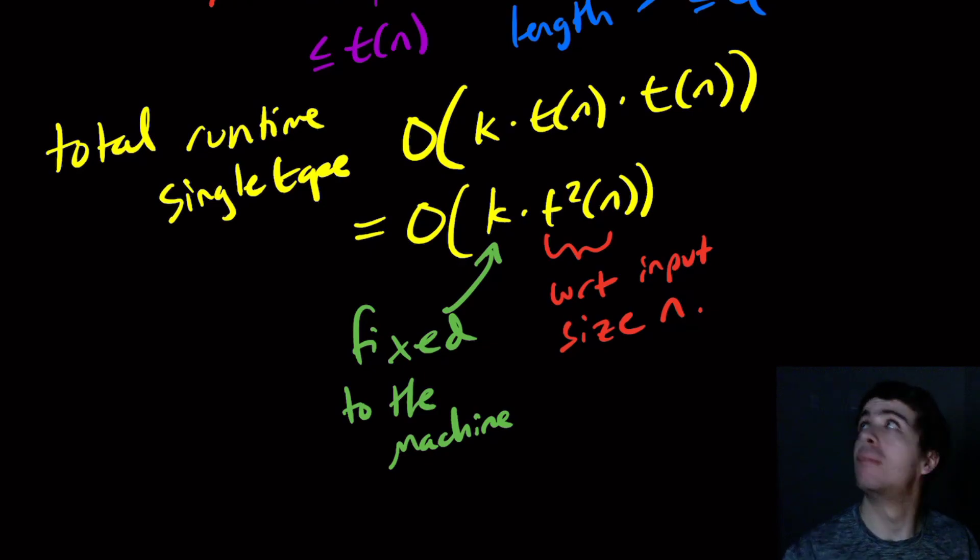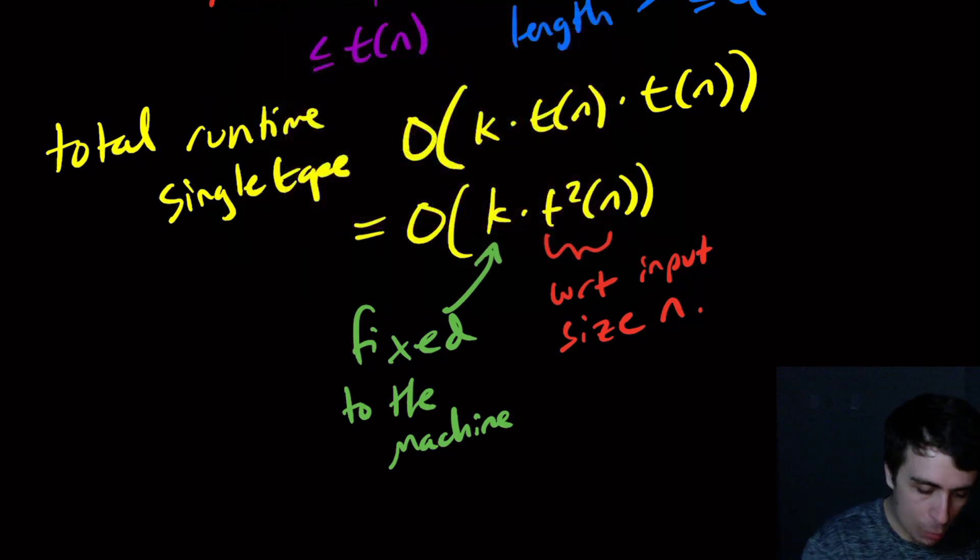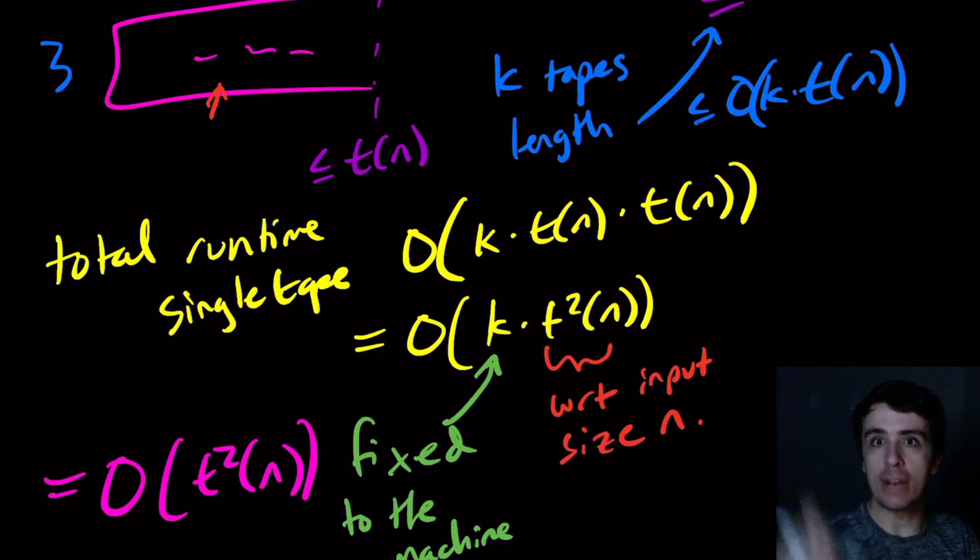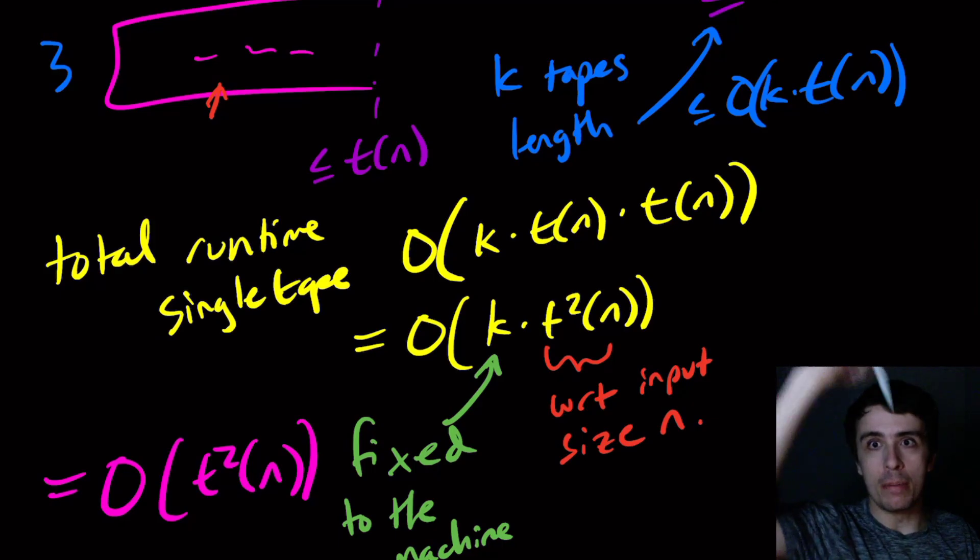Now, if we were somehow concerned with like making more and more tapes, which is not the case here, then we would consider this a parameter. But it's not because it's fixed to the machine. So at the end of the day, once the dust settles, we have T squared of n runtime, which is exactly what time T squared of n actually is. So hopefully that was interesting. Leave comments down below about the conversion here. As always, please like and subscribe to the channel. It really helps us out. There are many other links in the video description if you want to support the channel further. And as always, thanks for watching, and I'll see you next time.